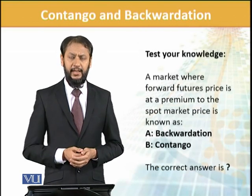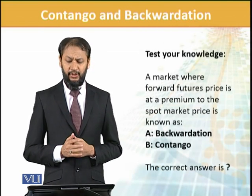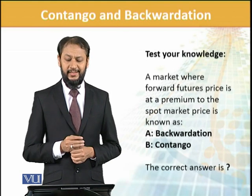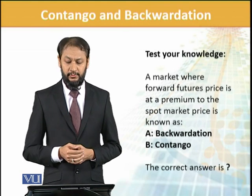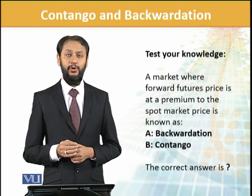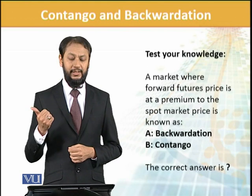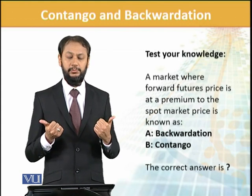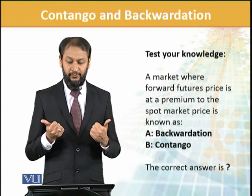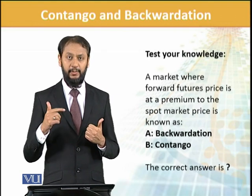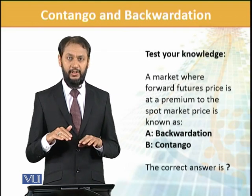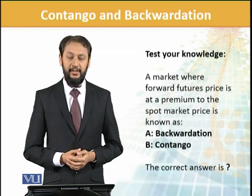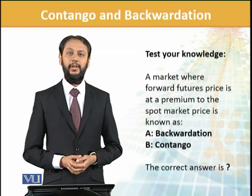Let's do a quick test. A market where the forward/future price is at a premium to the spot price is known as what — backwardation or contango? If the future price is at a premium to spot, the answer is contango. That is correct, thank you.